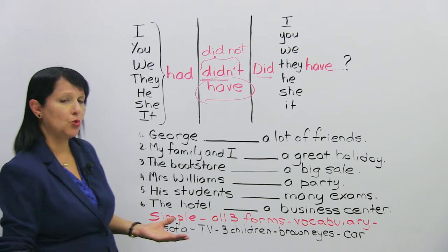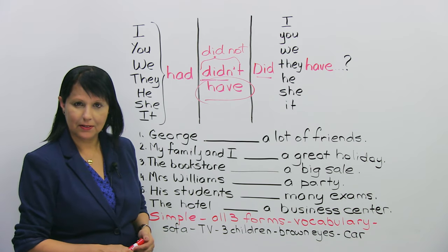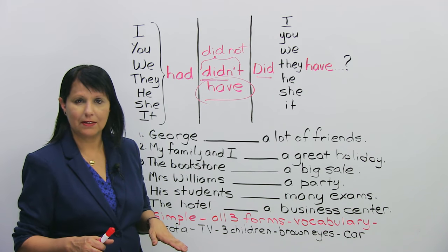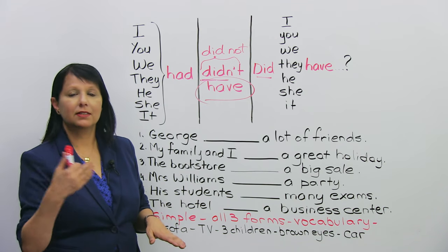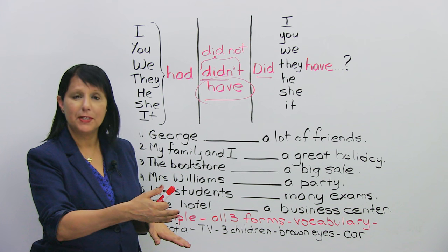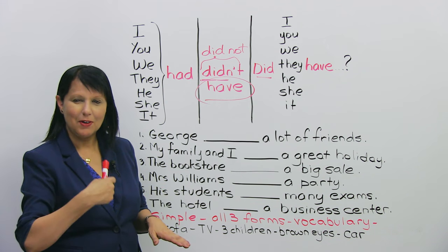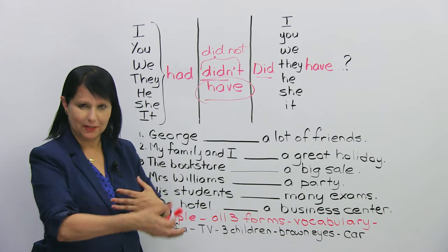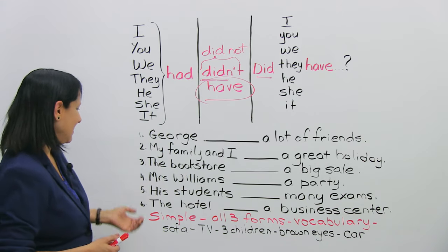The next one. The bookstore had a big sale. Negative. The bookstore didn't have a big sale. Question. Did the bookstore have a big sale? Okay? Positive. Negative. Question. You should be able to move smoothly through it. All right? That's why we're doing it.